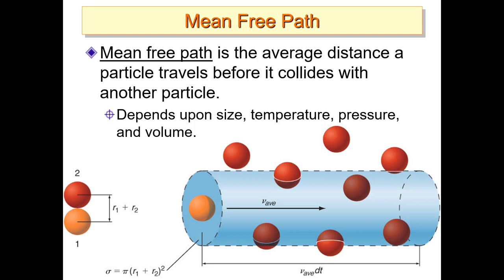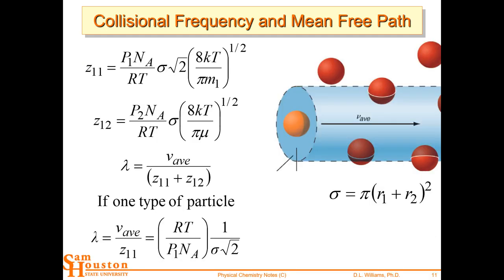How much space does the particle have to move around before it runs into something? Think of it as: how crowded is the dance floor? If you go on a Thursday night, the dance floor is pretty crowded — your mean free path may be half a foot. You move a little bit and you bump into somebody. You go on a Tuesday night, you get a 12-foot mean free path — much lower pressure.